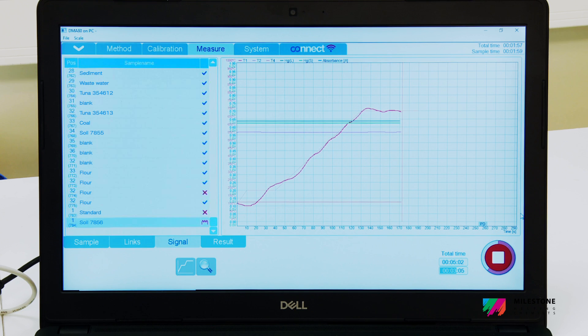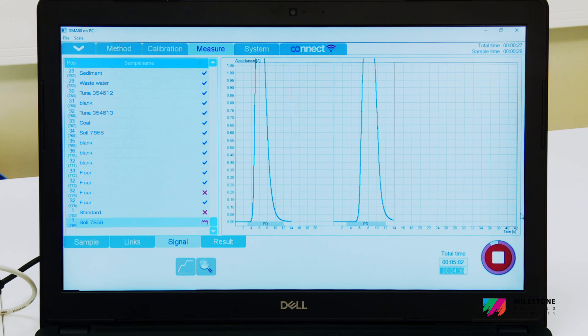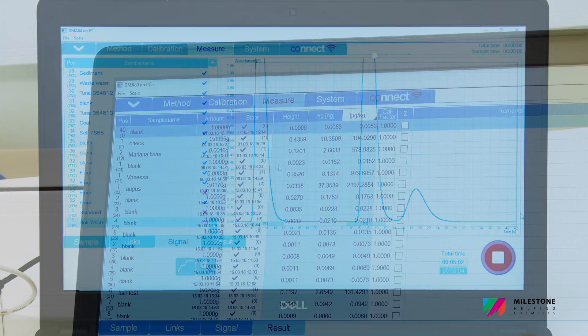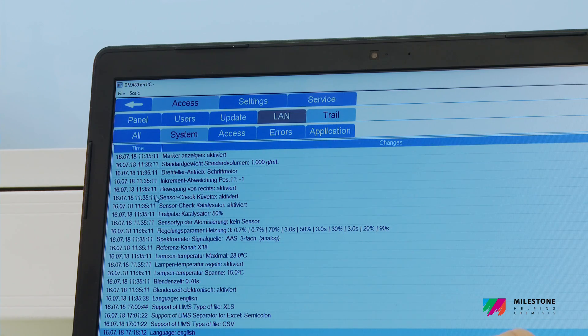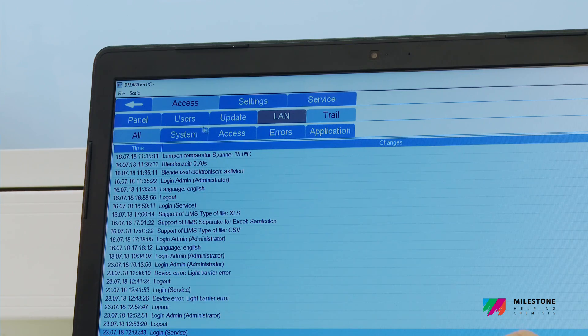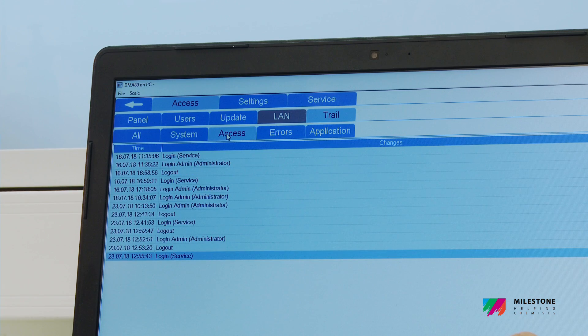The intuitive DMA80 software, called EasyControl, includes the most advanced features in order to simplify analysis reports, such as LIMS connection, import or export of data, and complete traceability through an audit trail in full compliance with FDA Regulation 21 CFR Part 11.